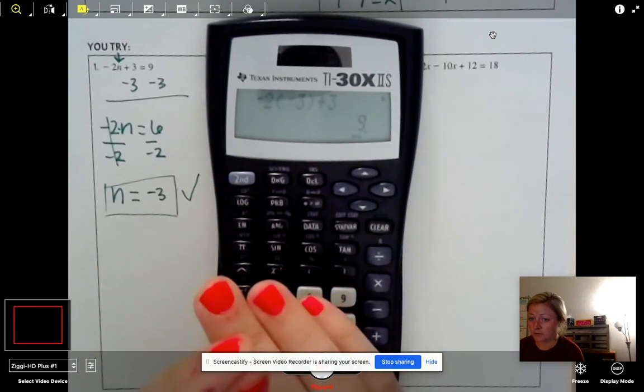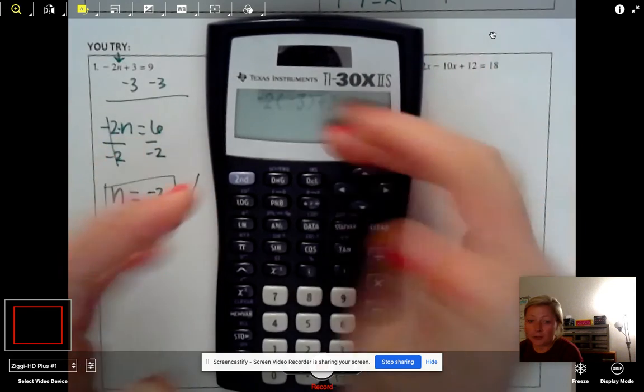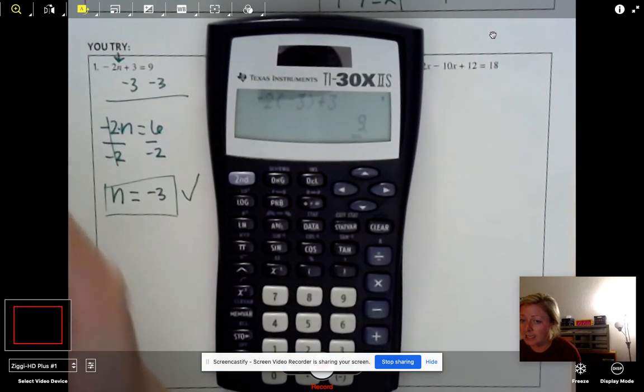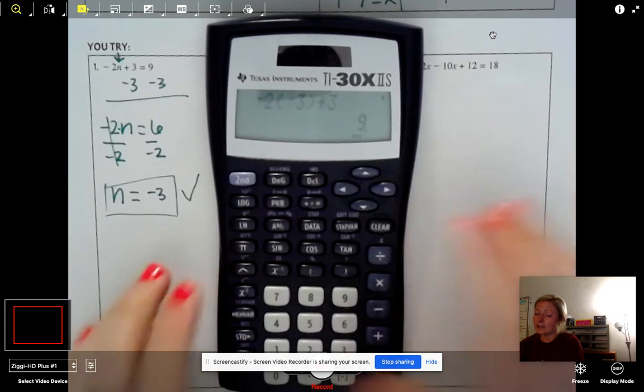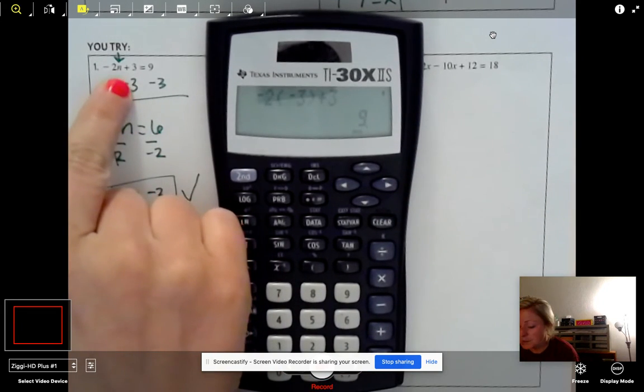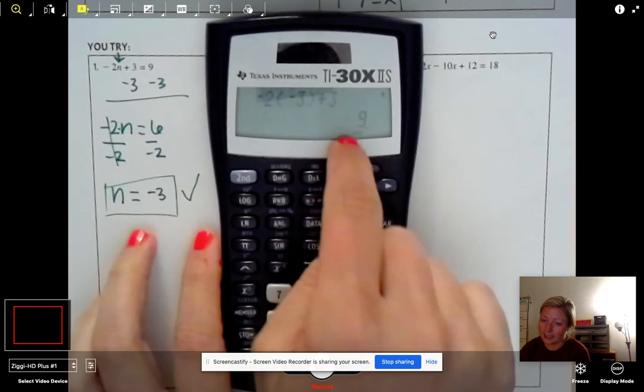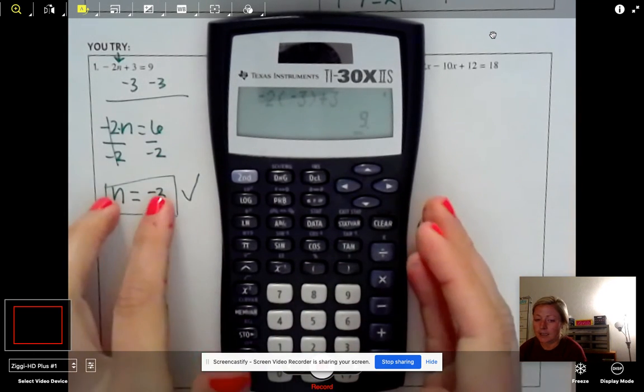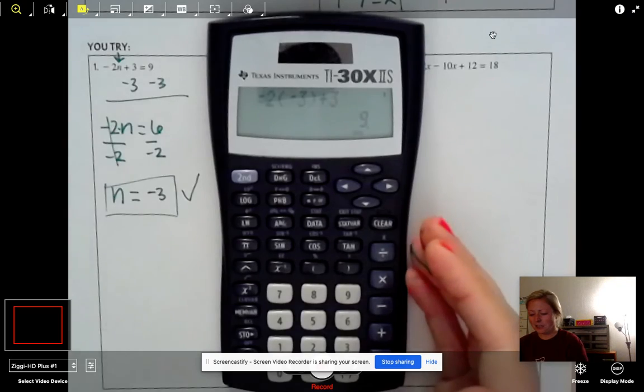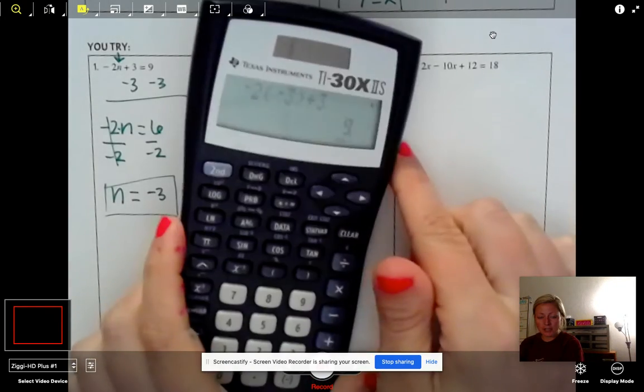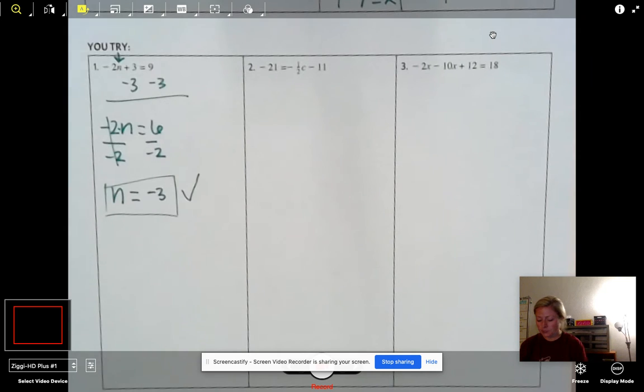The only cautionary thing I want to tell you about doing it in your calculator. Calculators are only as smart as you make them. Whatever you punch in, it will tell you the answer. But if you punch it in wrong, it's not going to know you punched it in wrong. It'll think whatever you type in is right. So if you put your parentheses in the wrong spot or you forgot a negative, it's not going to know. So just be aware that you could type it in wrong and get the wrong answer. Does that make sense? So however comfortable you are either doing it by hand or in your calculator, do one of those two options.